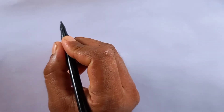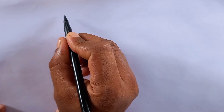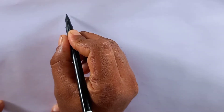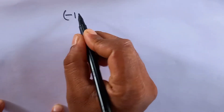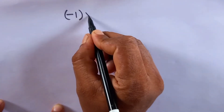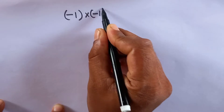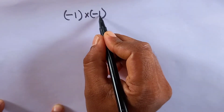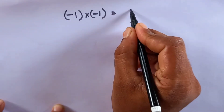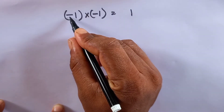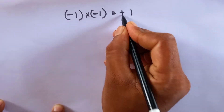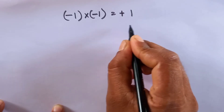Today I will show you the basic problem of algebra. The basic problem is when you minus 1 into another minus 1, we can write 1 and 1 is 1, and minus into minus is plus. This is the basic problem we know.